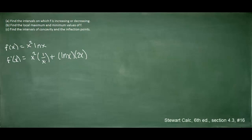We can simplify this by canceling out one of the x's, because we have x squared in the numerator and x in the denominator. So we're left with x plus 2x times the natural log of x.